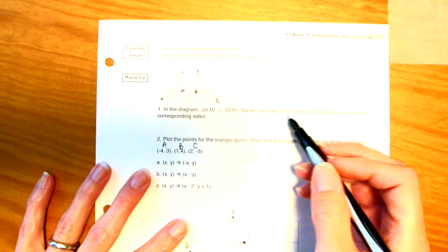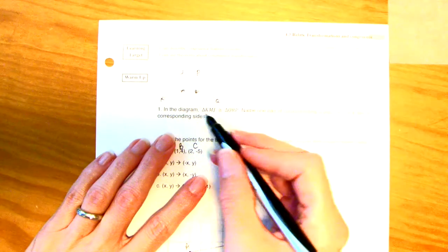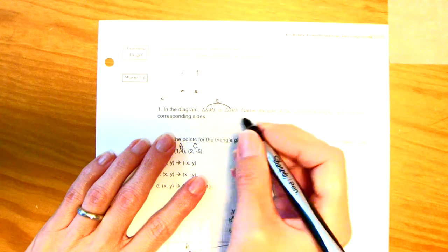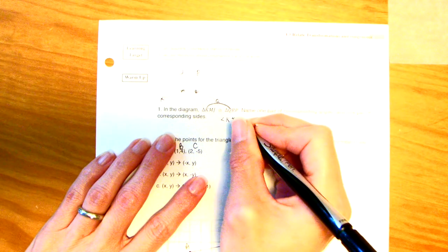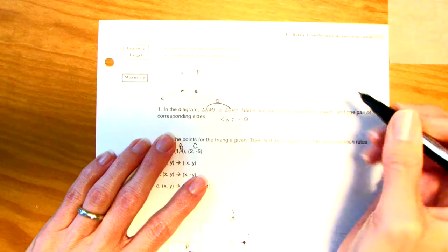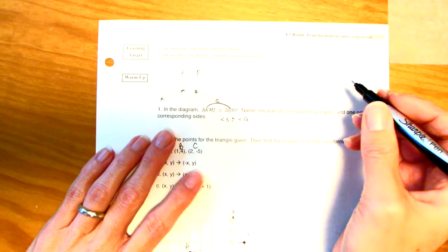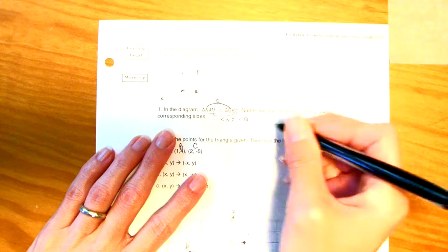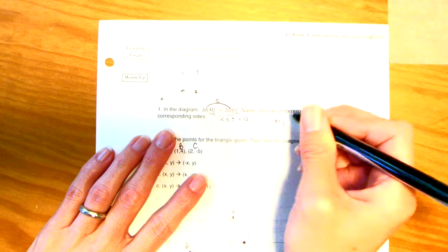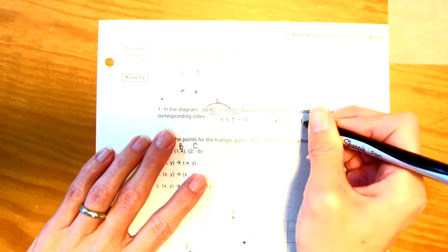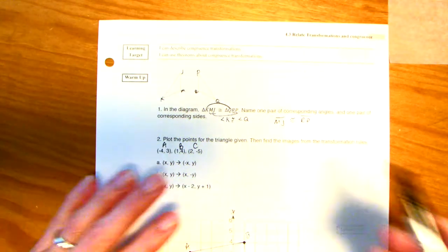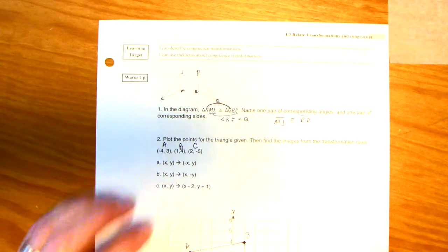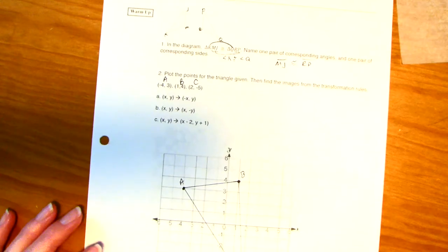Name one pair of corresponding angles. Well, this is my congruent statement, so follow through. The first letter is going to be congruent to the first letter of both triangles. So angle K is congruent to angle Q. And then one pair of corresponding sides. Let's pick MJ, is congruent to RP. They must be in that same order. If I wrote MJ and then put PR, I would have an error.